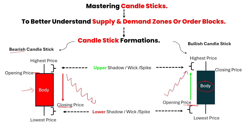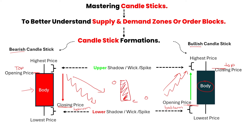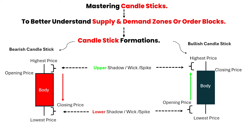They both have a closing price. As you can see, on the bearish candlestick we open at the top but close at the bottom. On the bullish candlestick, we open at the bottom and then close at the top. That's the only difference between these two candlesticks. They also have a shadow — this stick here is a shadow. You can also call it a wick or a spike.